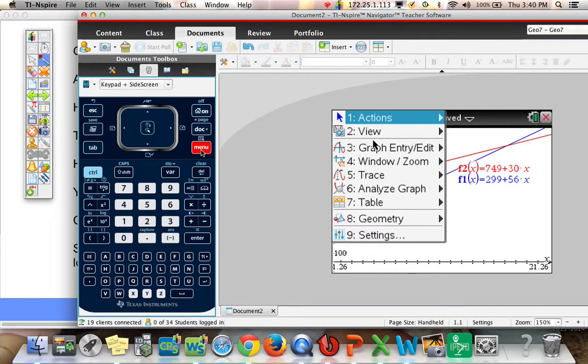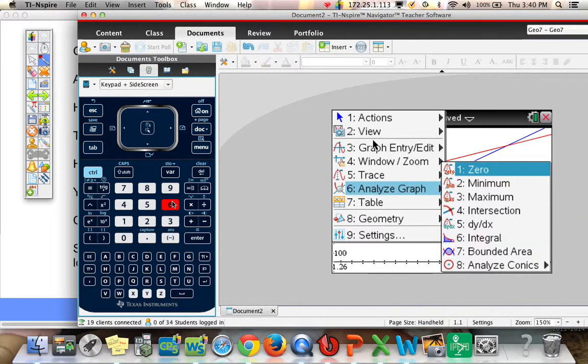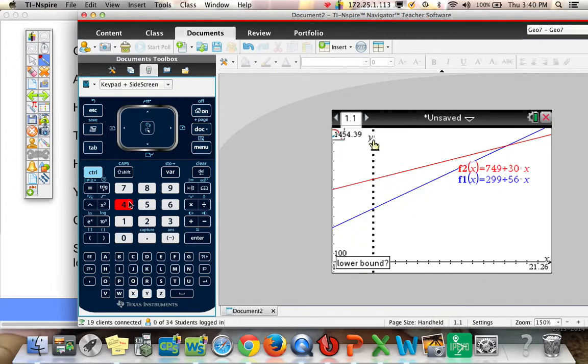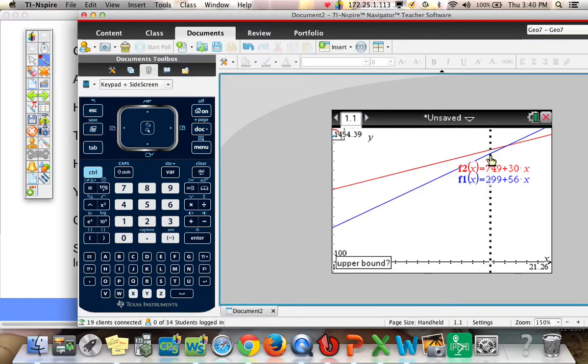So menu. 6 to analyze the graph. 4, we want the point of intersection. And then ask for lower or left bound. This is just telling us what area it's going to look for the point of intersection. So I'm going to define that.